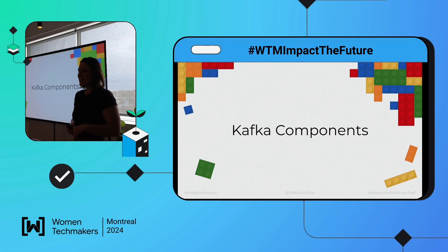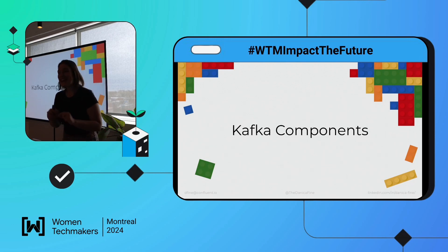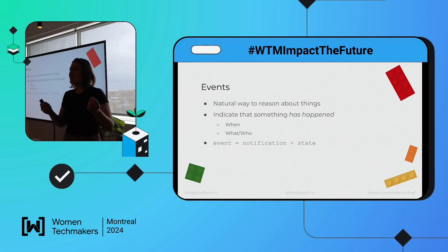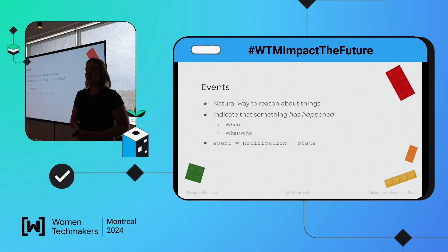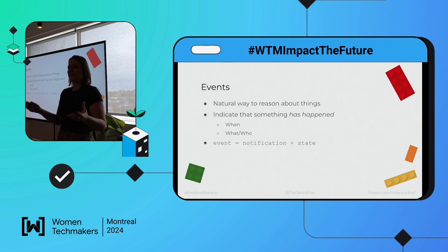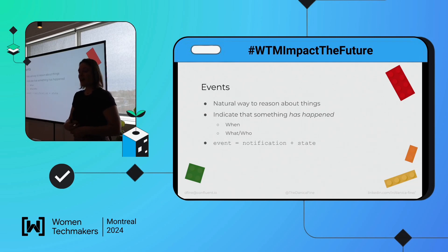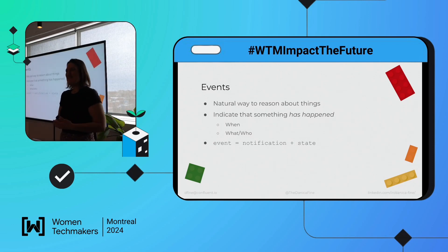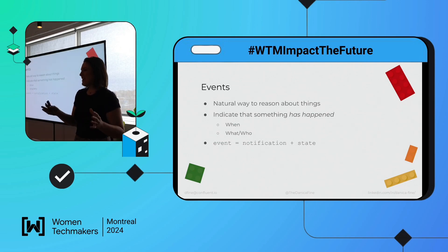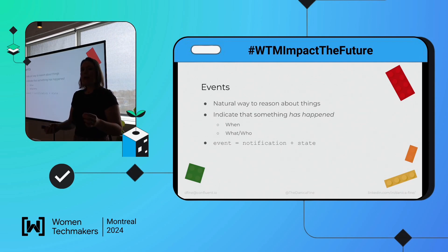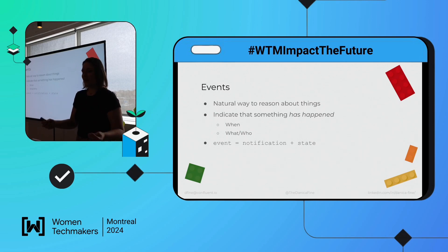Before we get into the actual components, there's a really important concept you need to understand first: events. Events are critical when dealing with Kafka. If you look at the definition, it is a 'distributed event streaming platform' — events are right there in the definition. I'm not asking you to re-architect how you think about technology. As humans, as programmers, as users, you already fundamentally know what events are.